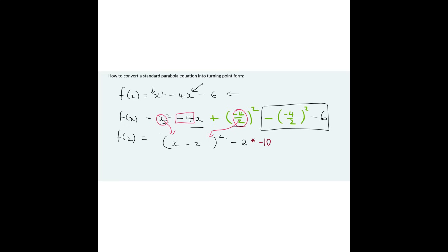Now look what we've done, guys. We have converted this equation over here into this over here, and that is in the form a x minus p squared plus q, where our a value is just a 1, our p is a 2, and then our q value is minus 10.